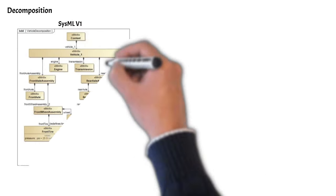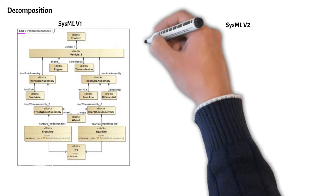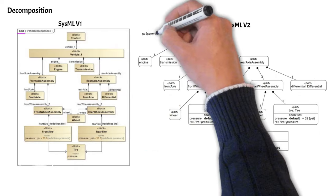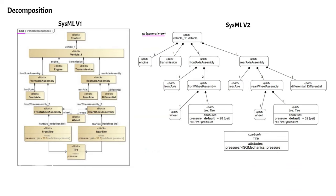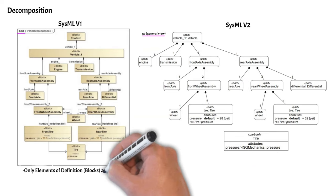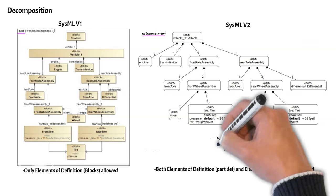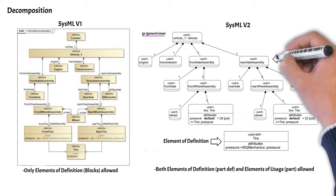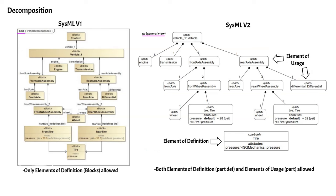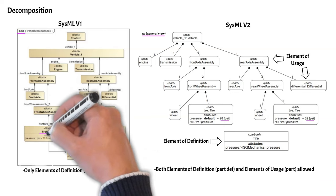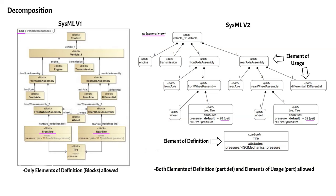SysMLv1 decomposes structure on a block definition diagram while SysMLv2 decomposes structure on a general view. Block definition diagrams in SysMLv1 only allow elements of definition to be shown, whereas general views in SysMLv2 allow both elements of definition and elements of usage. This additional feature allows front tire and rear tire pressure attribute values to be added easily, making SysMLv2 a more concise and straightforward method of decomposition.